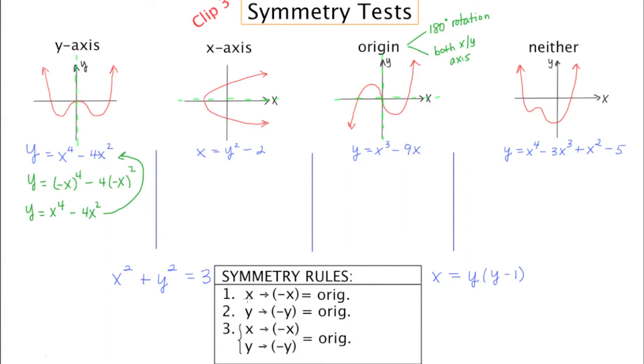So if you take your x, replace it with negative x, and get the original equation back, this is an example of y-axis symmetry.